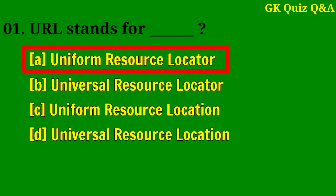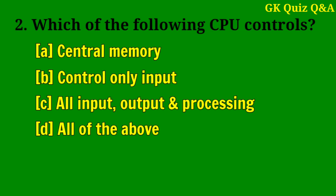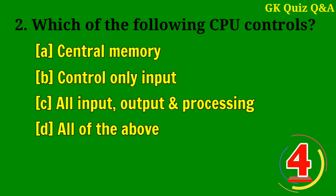Which of the following does the CPU control? Answer C: All Input, Output, and Processing.